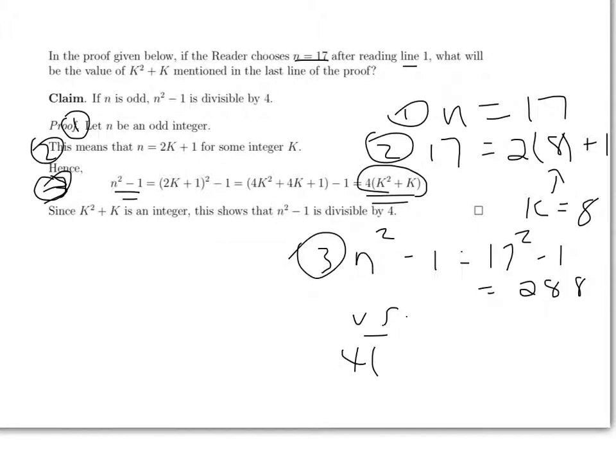4 times k squared plus k. Again, k is 8, so 8 squared plus 8, which is 4 times 72, which is also 288. So that's actually correct for this choice of n.